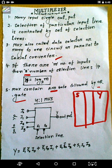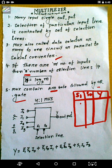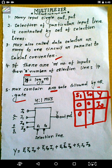The input line selected depends on the values of S1 and S0. When S1=0 and S0=0, MUX selects I0 as the output. When S1=0 and S0=1, MUX selects I1 as the output. When S1=1 and S0=0, MUX selects I2 as the output. When S1=1 and S0=1, MUX selects I3 as the output.